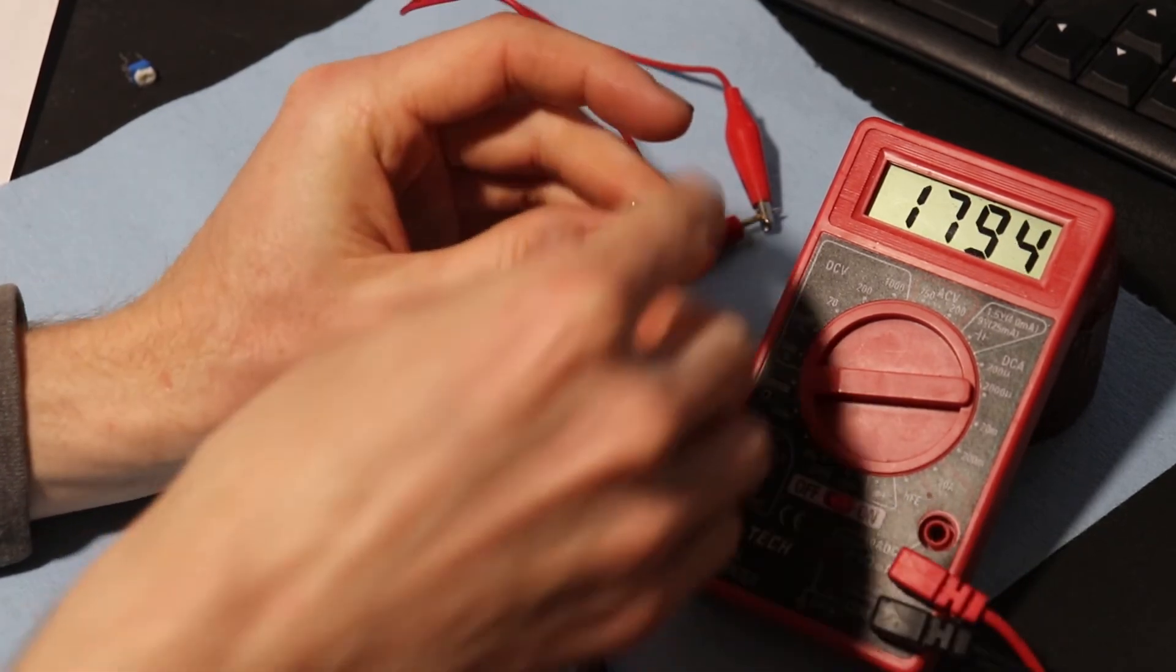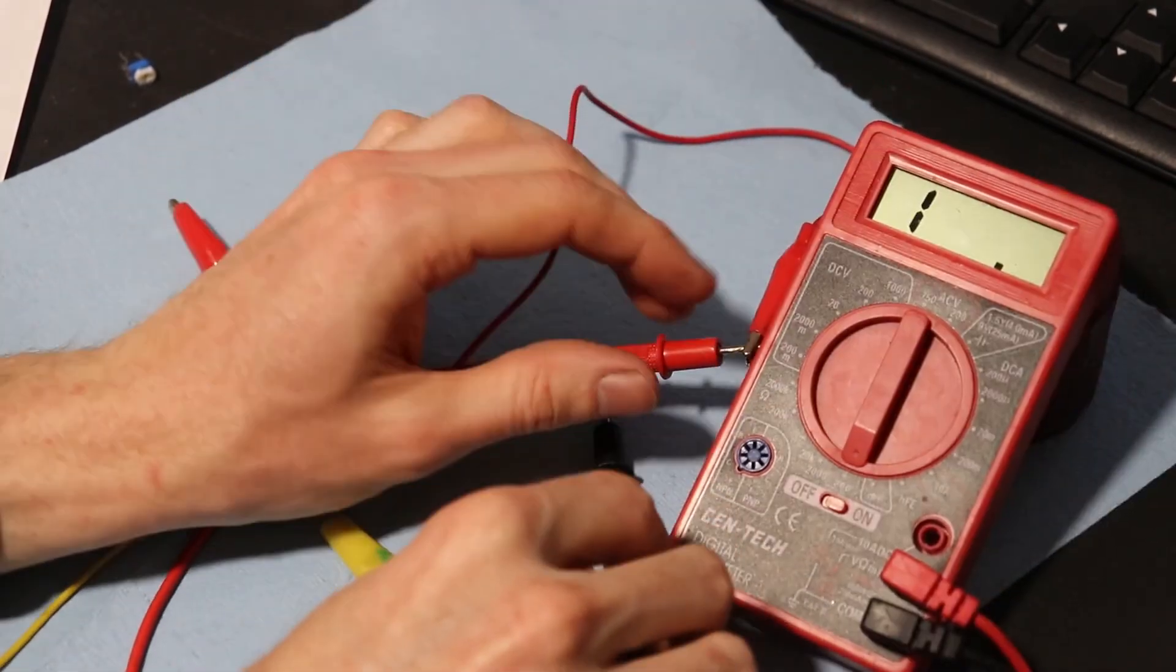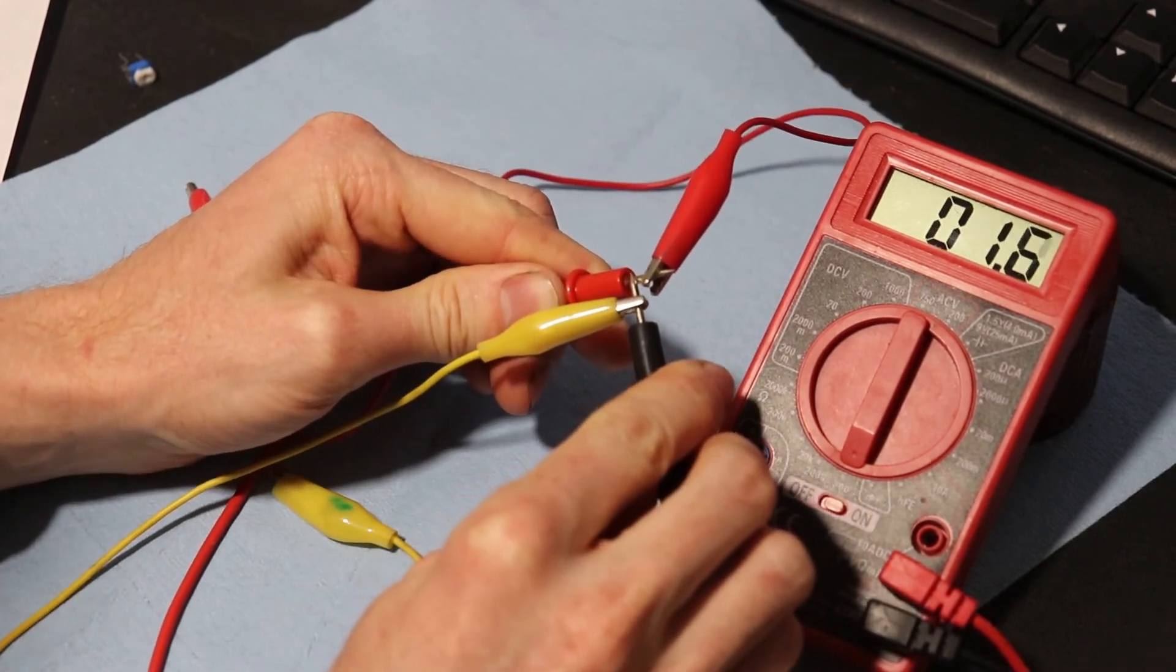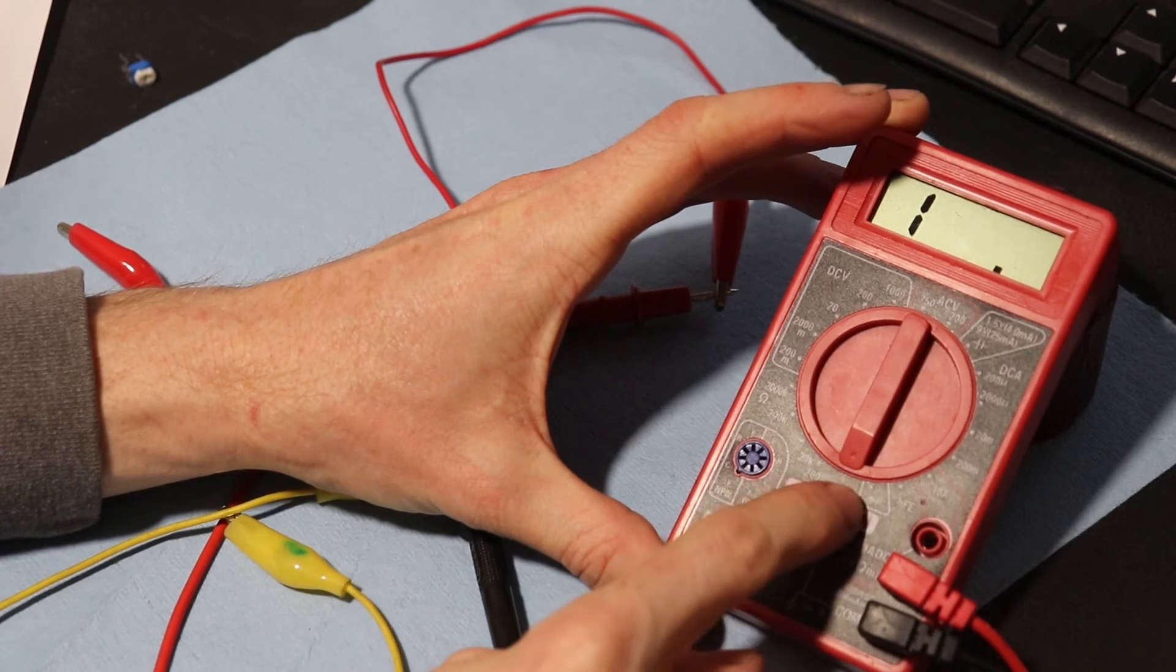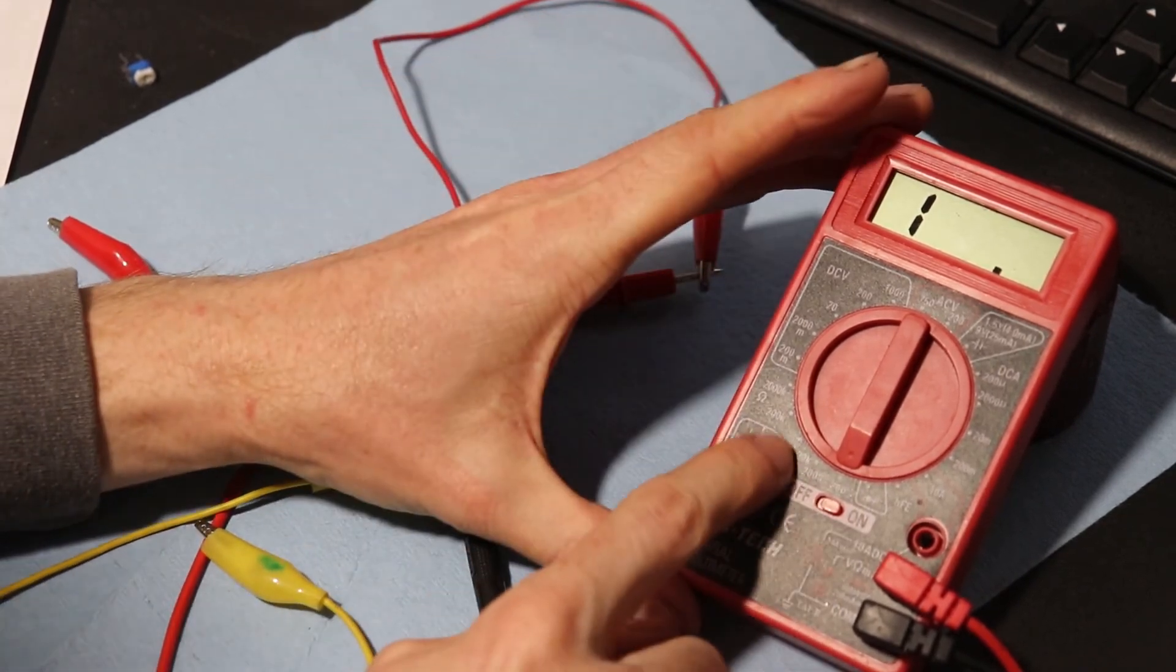So basically, if you're not getting a reading when you put your leads across your resistor, make sure that when you touch the two leads together, you get a small amount of resistance that are just in the leads. And then you want to be using the lowest setting that you possibly can. That way you'll get the most precision out of your reading.